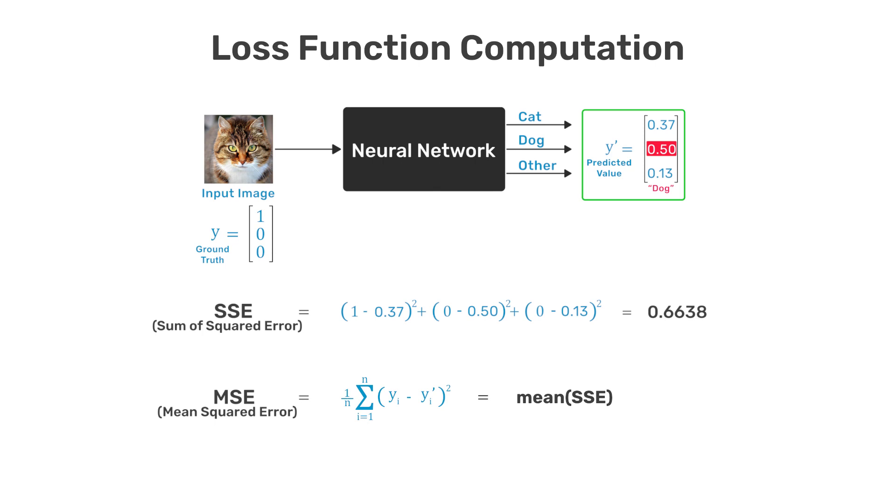Other loss functions can also be used, however they all require a numerical representation for the input image class label and the predicted output of the network. Now that we have some idea for how to represent the error between the input to the network and the expected output, we can start to think about how we can use that information to train the network.